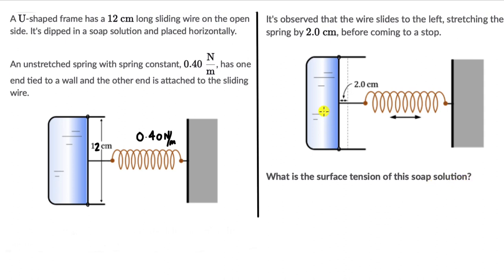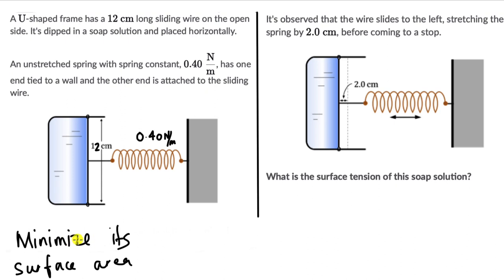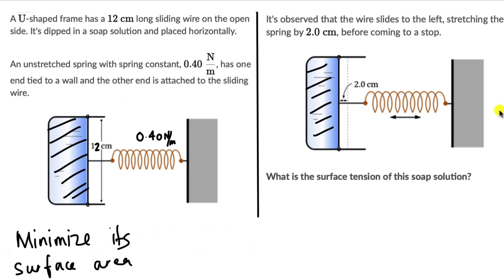When we see that the sliding wire moves to the left, we can ask why. This is a soap solution and it has surface tension. Surface tension is the property of any liquid that wants to minimize its surface area. The wire sliding left reduces the surface area, which makes sense. The only reason the wire moves to the left is that there must be some force acting on it.